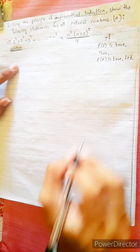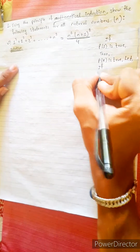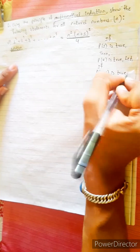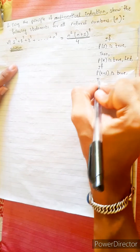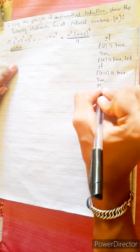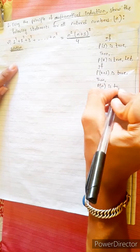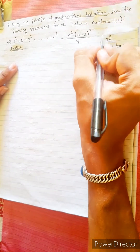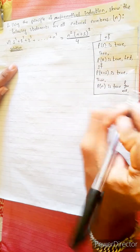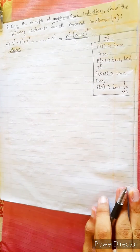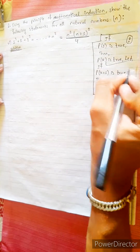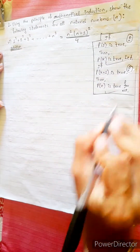If p(k) is true, then p(k+1) is true for all. p(1) is true for all. This is true. We can prove it in a way.